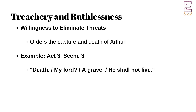King John's reign is marked by acts of treachery and ruthless decisions. One of the most notable examples is his order to capture and imprison his young nephew Arthur. Fearing Arthur as a rival claimant, John's actions lead to Arthur's tragic death, an act that reveals John's willingness to eliminate threats to his power at any cost.